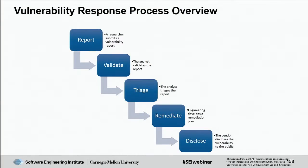The next step is remediation, which goes to your engineering team to decide how to patch the vulnerability and get it into your development process — using your secure coding and DevOps practices to make sure you don't introduce more vulnerabilities by fixing the one you found. Finally, disclosure: best case is the vendor, the researcher, and CERT, if we're involved, all disclose the vulnerability at the same time.